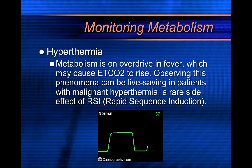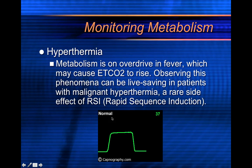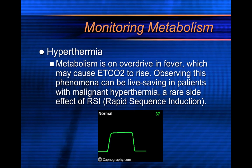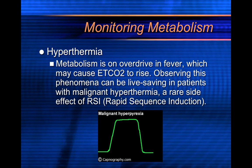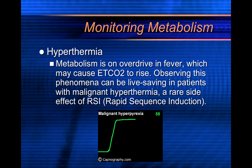Hyperthermia — your febrile patients, such as those with malignant hyperthermia or hyperpyrexia. You'll get a normal value initially, and then with malignant hyperthermia, a super high value. The reason is because metabolism is on overdrive. When you're febrile, your metabolism is working more. More cellular metabolism means you're consuming more oxygen and producing more CO2, and if you produce more CO2, you're going to get higher readings from your capnography device.